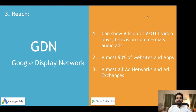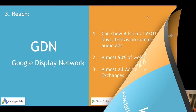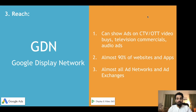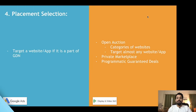In DV360, your ads can appear on almost 90% of websites and apps because DV360 buys inventory not only on the Google Display Network but also on other ad exchanges and ad networks. Almost all ad networks and ad exchanges are connected to DV360, and additionally DV360 can buy inventory on OTT platforms like on-demand TV and live streaming TV channels.